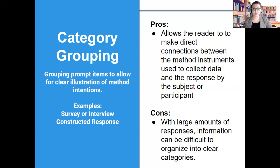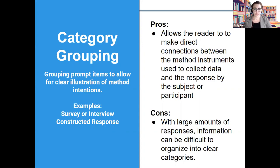Another way to organize your analysis is through category grouping. This means grouping prompt items into designated categories to allow for clear connections to your method instruments. You might make these categories based off your intentions for different items used in your instrument for data collection — examples include responses, interviews, or constructed responses from questionnaires. One pro for this structure is that it allows the reader to make direct connections between the method instruments used and the response by the subject or participant. However, a con is that with large amounts of responses, information may be too difficult to organize into clear categories.